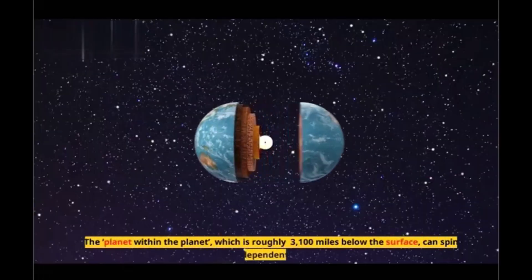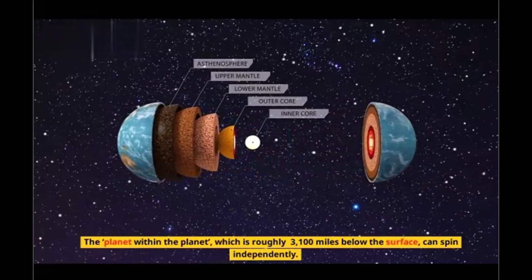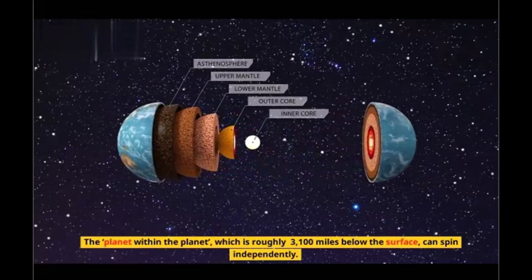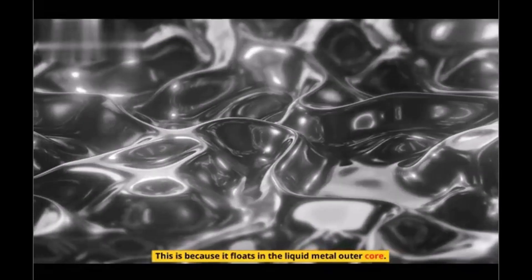The planet within the planet, which is roughly 3,100 miles below the surface, can spin independently. This is because it floats in the liquid metal outer core.